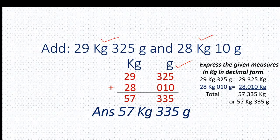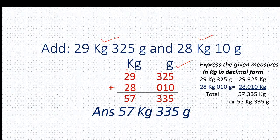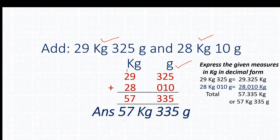After that we do additions: 5 plus 0 equals 5, 2 plus 1 equals 3, 3 plus 0 equals 3. Moving to the kg column: 9 plus 8 equals 17 — 7 written here and 1 will be 10 kg, so we have 17 kg. 17 kg is written as 10 kg plus 7 kg, so 1 will be added to the next column. 1 plus 2 plus 2 equals 5. Our answer is 57 kg 335 gram.